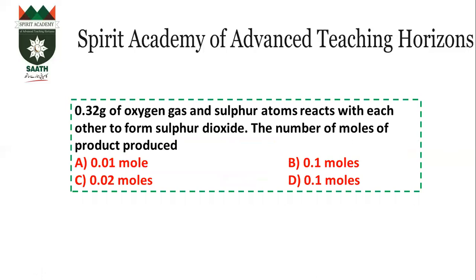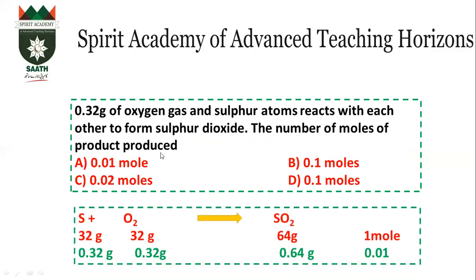0.32 grams of oxygen and sulfur atoms react to form sulfur dioxide. How many moles of product are formed? Balanced equation: S + O₂ → SO₂. Sulfur mass is 32, oxygen is 32, SO₂ is 64 grams per mole. Dividing everything by 100 to match 0.32 grams gives 0.01 moles of SO₂. The answer is A.